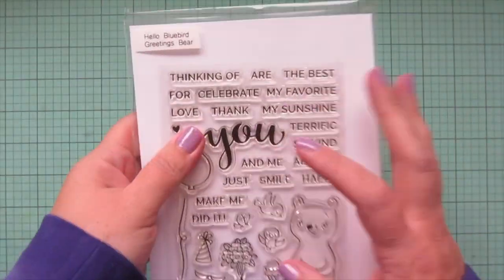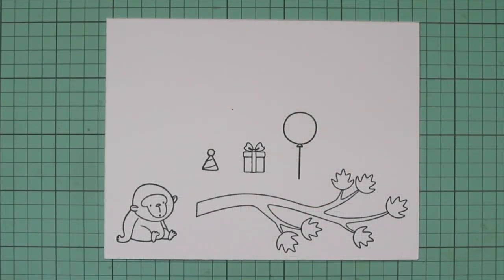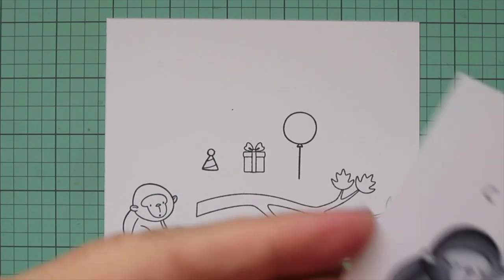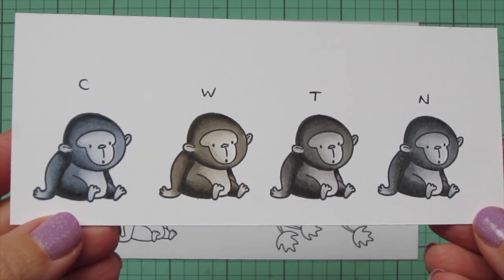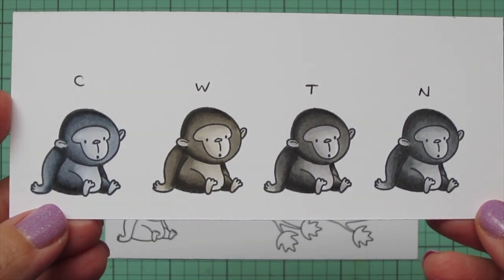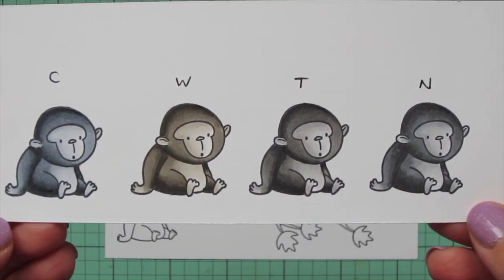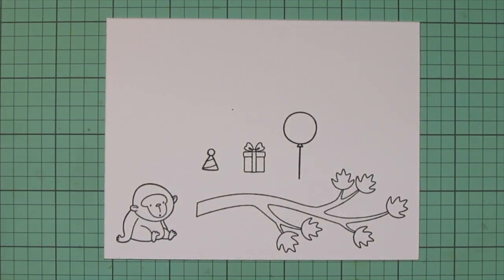So I stamped the images I'll be using on some Spectrum Noir Ultra Smooth Premium White Cardstock with Lawn Fawn Jet Black Ink. I recently did a video comparing the different families of Copic Grays using this gorilla image and that just inspired me to create a card with him as well because I just love him so much.